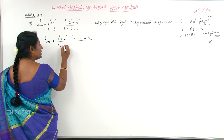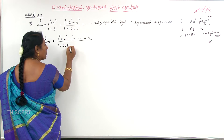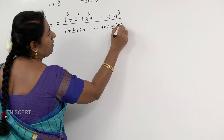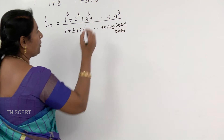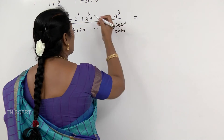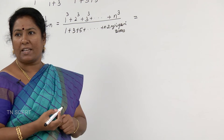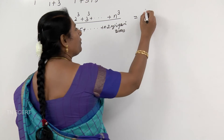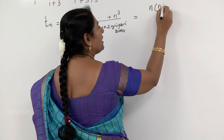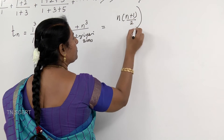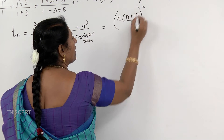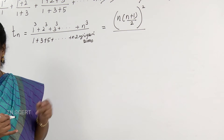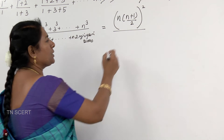We have tn. tn is what term: let's say n into n plus 1 by 2 the whole square. Let's look at that formula — n into n plus 1 by 2 the whole square. By 1 plus 3 plus 5 plus n — that formula is n square.